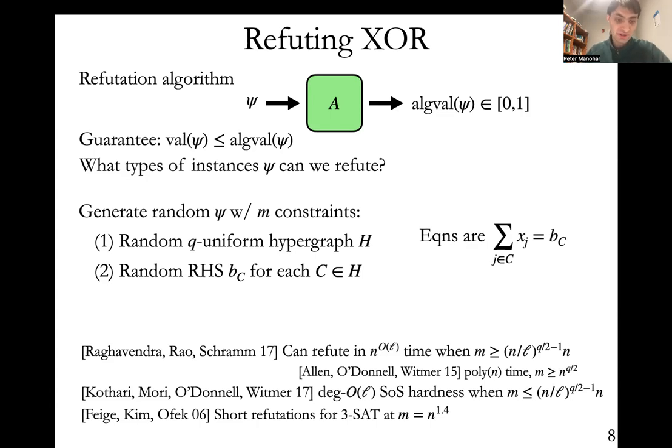There's also a matching lower bound, showing that degree O(L) sum of squares cannot beat this—needs at least this many constraints in order to refute. There's also this interesting work of Feige, Kim and Ofek, which shows that for 3SAT, there exist these refutations that are short and efficiently verifiable when you have only n^1.4 constraints, which is below the n^1.5 constraints you would need in order to refute with a polynomial time algorithm. So these FKO certificates are like if you allow the refutation algorithm to run in non-deterministic polynomial time. And here, as I said earlier, I've suppressed a lot of polylog n factors, which I'm doing throughout the talk.